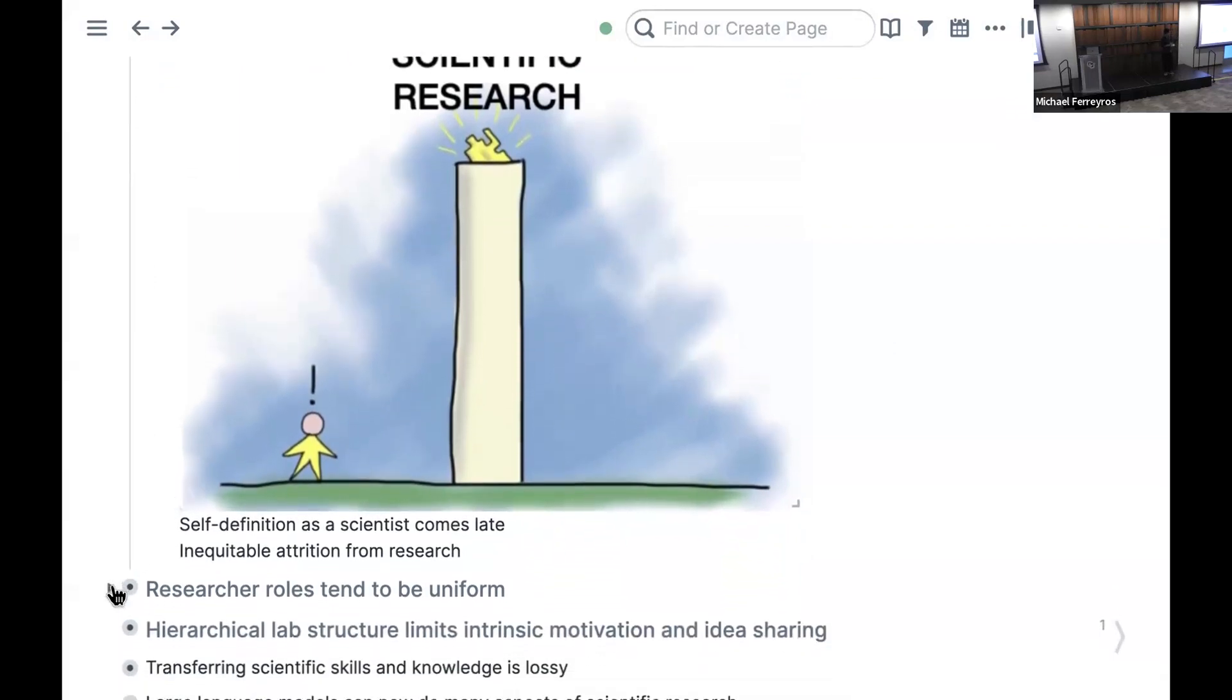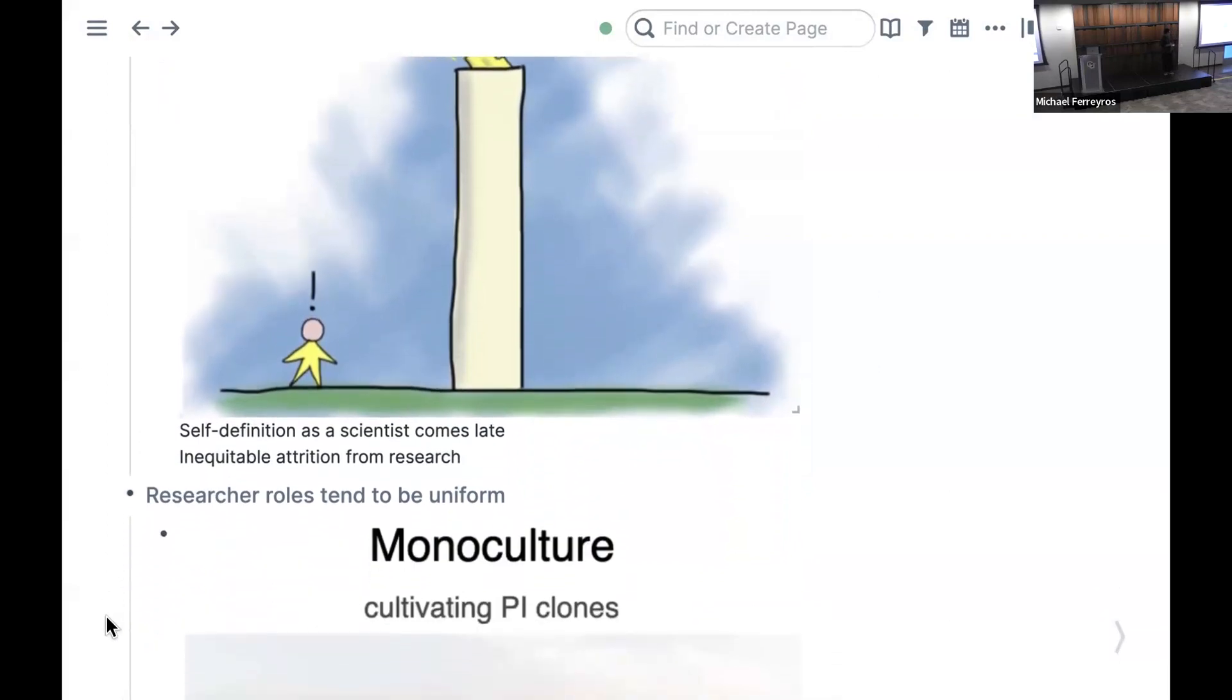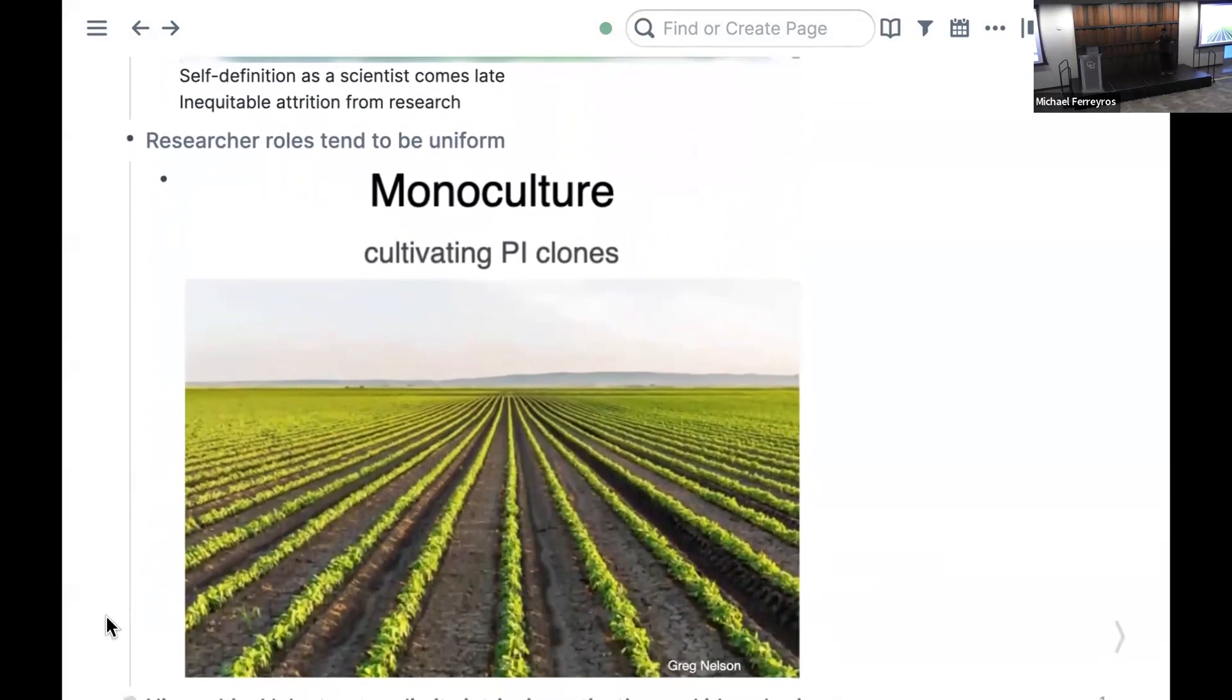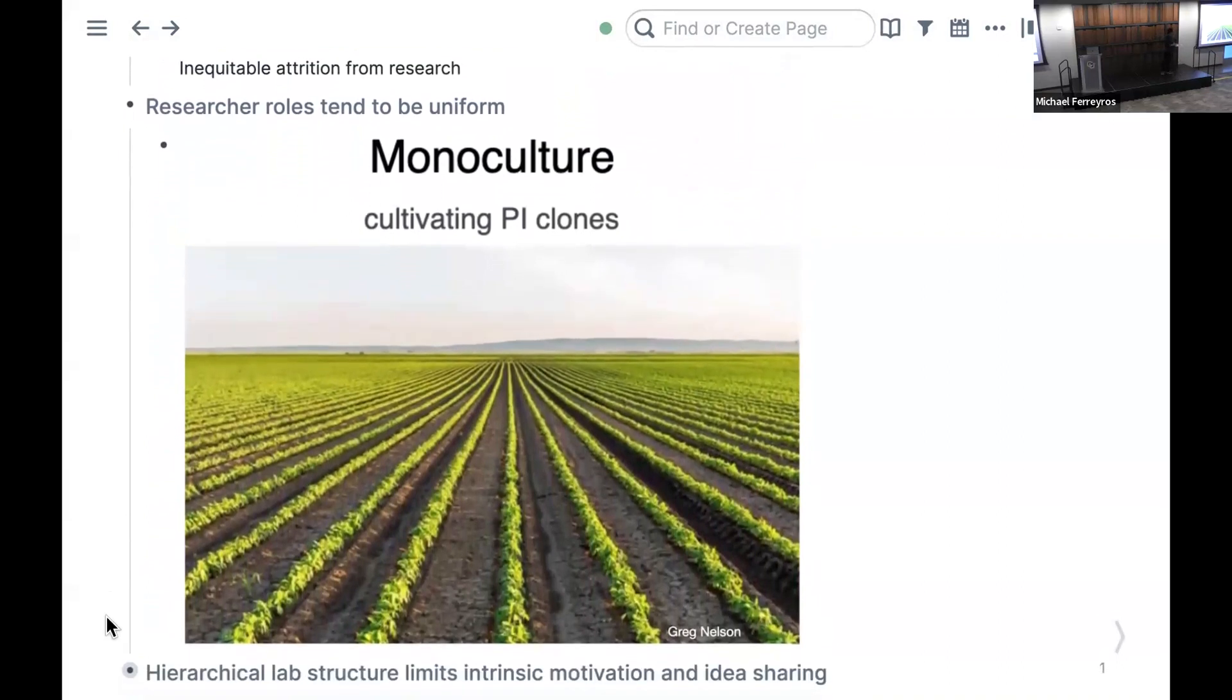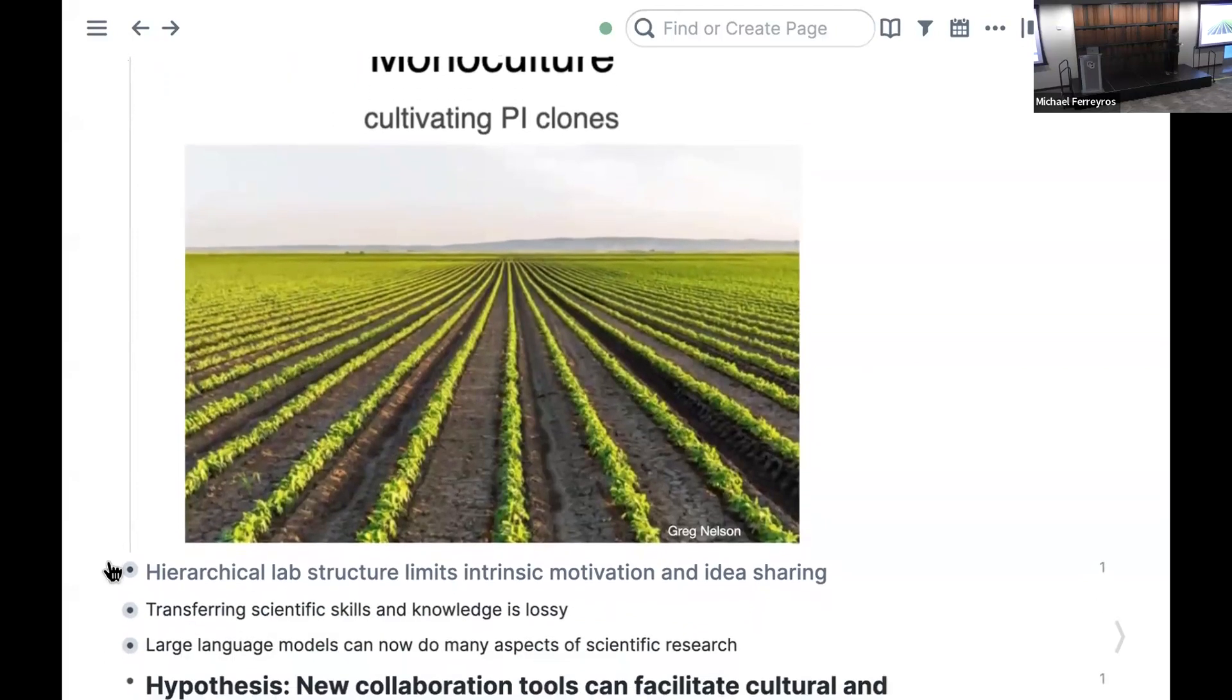A second related note is that the academic research environment mostly accommodates one sort of phenotype, which is the PI that has a certain skill set, which is like all of the skill sets. I equate this to non-sustainable agriculture. It's such a shame that there isn't space for people who want to contribute to the research ecosystem in unique ways that all fit together in a sustainable manner. This analogy comes from Greg Nelson, who's an HCI researcher in Maine.